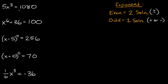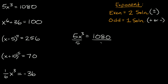Let's start with this first one: 5x cubed is equal to 1080. The first thing I want you to notice is the exponent — it's odd, so we're only going to have one solution. In order to solve for x, the first thing we'll do is get rid of this 5 by dividing both sides by 5. We get x cubed is equal to 1080 divided by 5, which is 216.